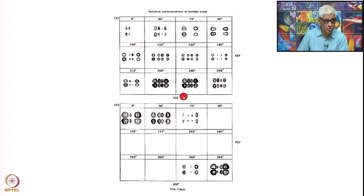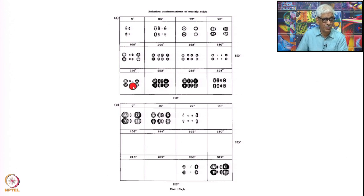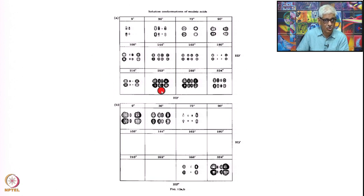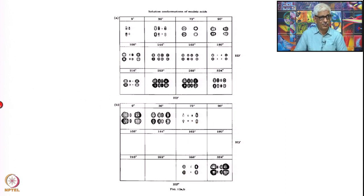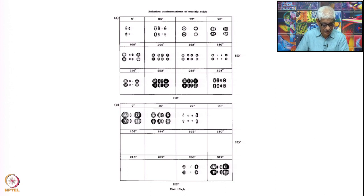All the peak patterns have to match at the same time. You choose a certain set of coupling constants: you must match not only the 1'-2' and 1'-2'' but also the 2'-3' and 2''-3' fine structures. Only then can you be confident that your coupling constant calculations are correct.